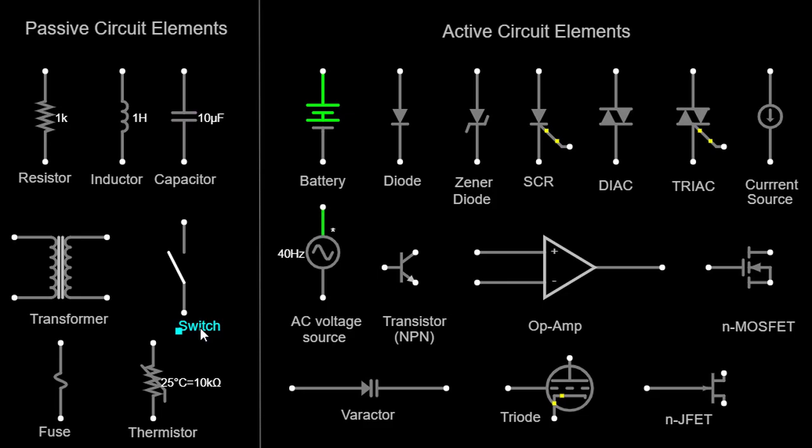Switch. A switch is an electrical component that can open or close a circuit, allowing or interrupting the flow of current. It is represented by a simple line with a gap that can be closed or connected.